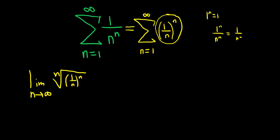If this limit is less than 1, the series converges. If it's bigger than 1, the series diverges. If it's equal to 1, no information.